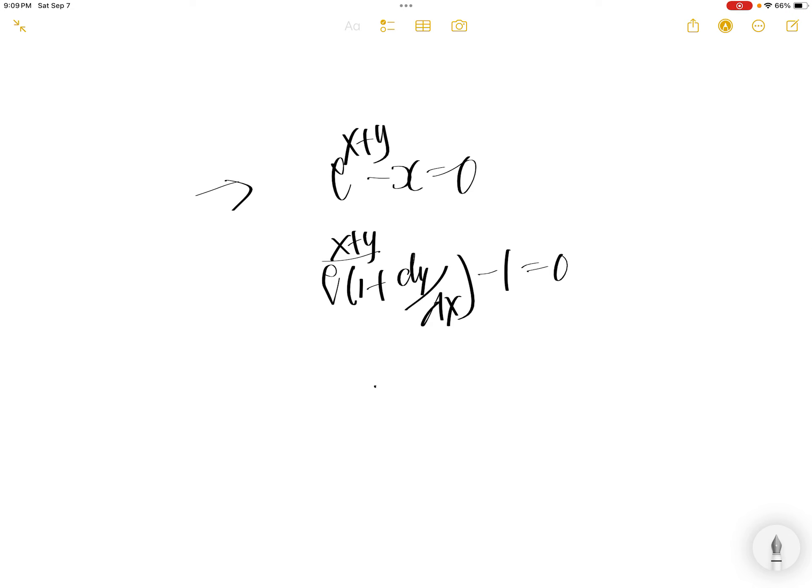Separate the dy/dx, so it will be e to the power x plus y times dy/dx, and then bring the rest to the right hand side. So you have e to the power x plus y, then minus 1.